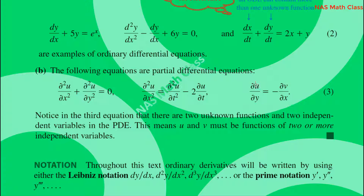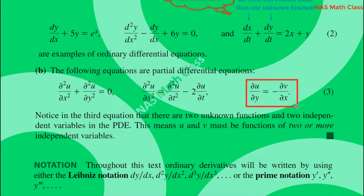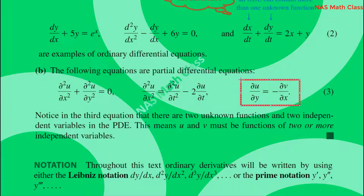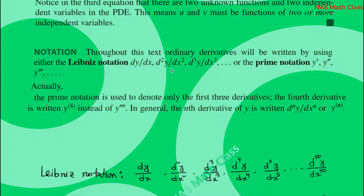In a partial differential equation, if we have both y and x as independent variables — that is, two or more independent variables — then that equation is a partial differential equation. We will now look at some common notation used in differential equations.